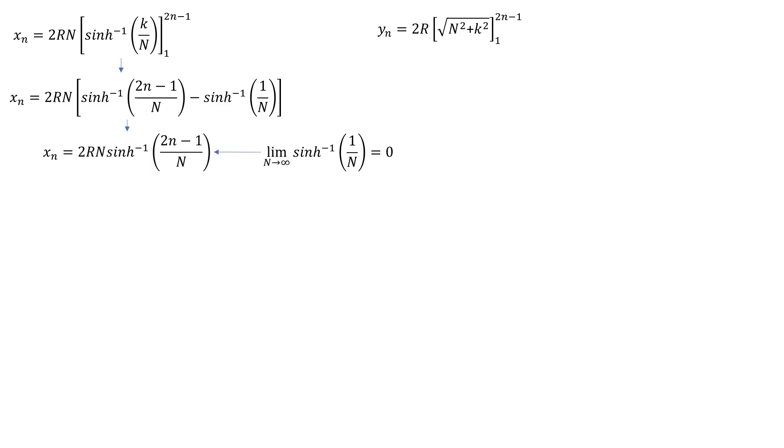Now divide by 2RN and take the inverse function. We get that 2N minus 1 is cap N times the sinh of XN over 2RN. This will come in handy in a minute. Can you feel that we are getting close to our catenary curve?